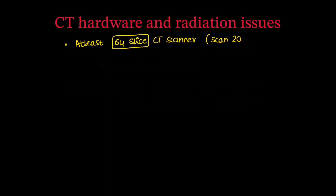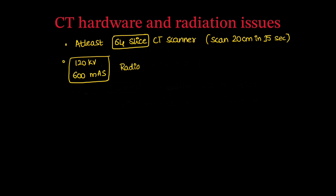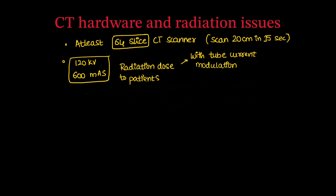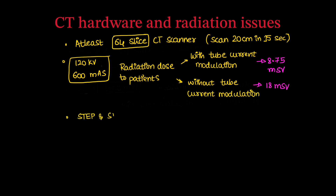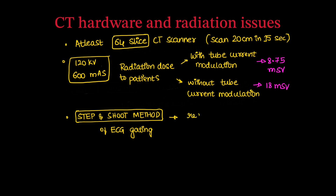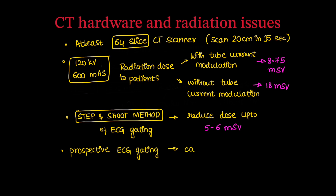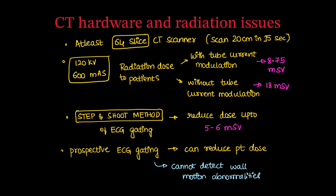The CT machine should be a minimum 64-slice scanner capable of scanning 20 cm in 15 seconds. Settings are 120 kVp and 60 mAs. Radiation dose with tube current modulation is approximately 8.75 mSv; without modulation it rises to around 18 mSv. Using the step-and-shoot method with ECG gating can reduce the dose further to 5–6 mSv. Prospective ECG gating also reduces patient dose, though it cannot detect wall motion abnormalities.